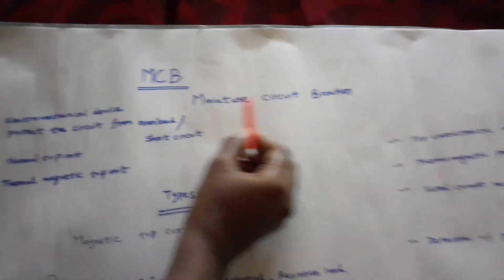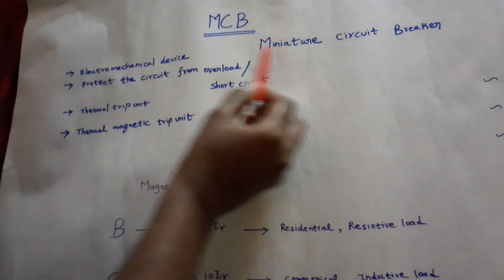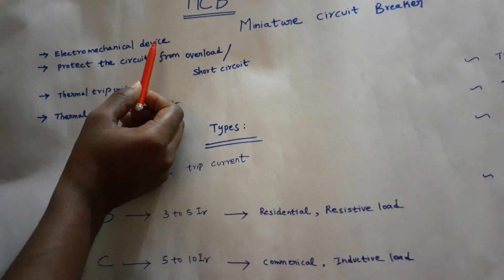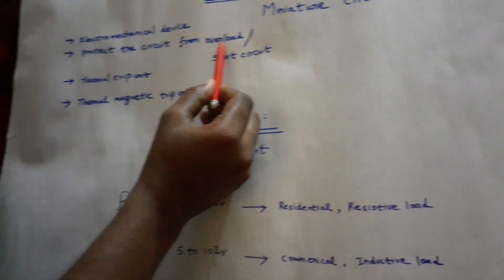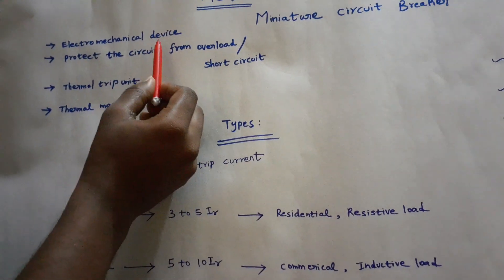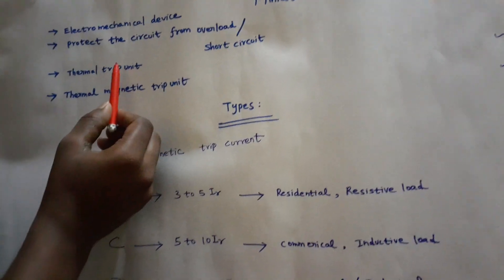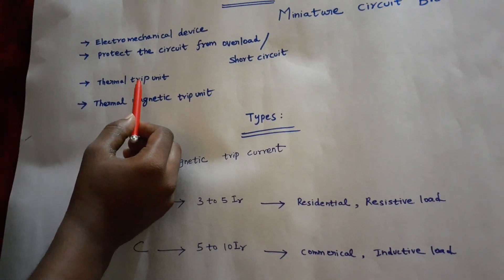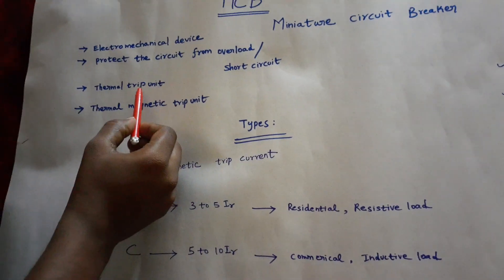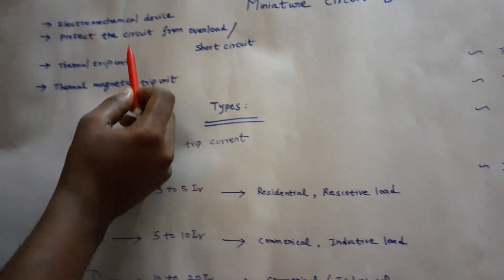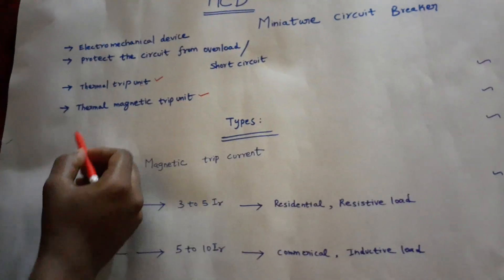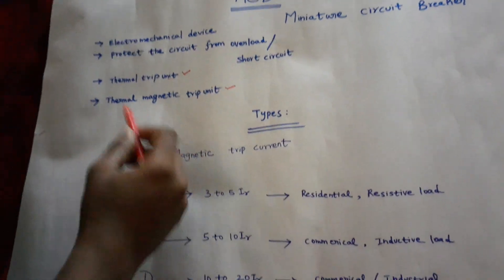MCB is a miniature circuit breaker. It is an electromechanical device. When placed in a circuit, it protects against short circuit or overload conditions. In MCB, there are two trip units: one is the thermal trip unit, which provides protection against overload, and the magnetic trip unit, which provides protection against short circuit.